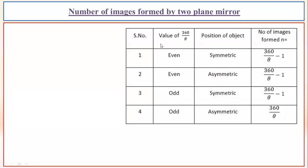Let's continue. As I was explaining, the images formed by plane mirrors — when the object is placed symmetrically or asymmetrically, if the number is coming as even, then the total number of images which will be forming is the number we are getting, which is considered to be n minus one.